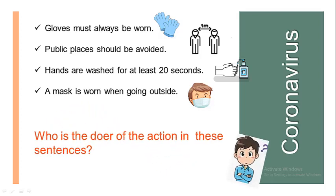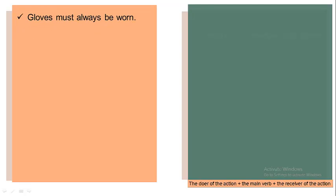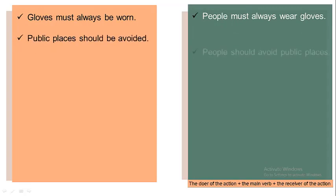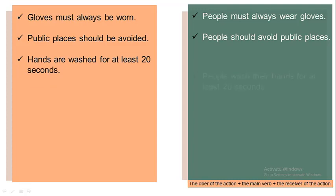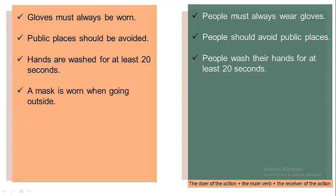So, who is the doer of the action in these sentences? Let's think about it. Gloves must always be worn — who is doing the action of wearing gloves? It's people. So if we want to follow the rule of what a sentence is made of, gloves must always be worn must be written as: people must always wear gloves. Public places should be avoided is originally: people should avoid public places. Hands are washed for at least 20 seconds — people wash their hands for at least 20 seconds. And a mask is worn when going outside is originally: people wear a mask when going outside. But what is the difference between these two groups of sentences?